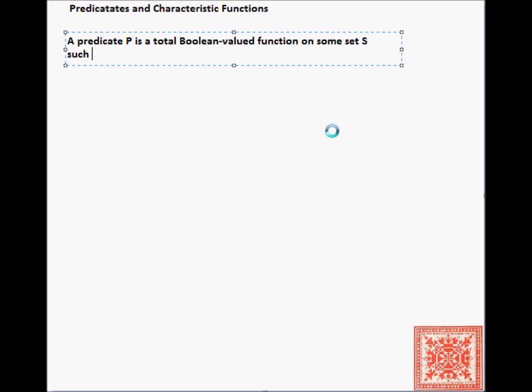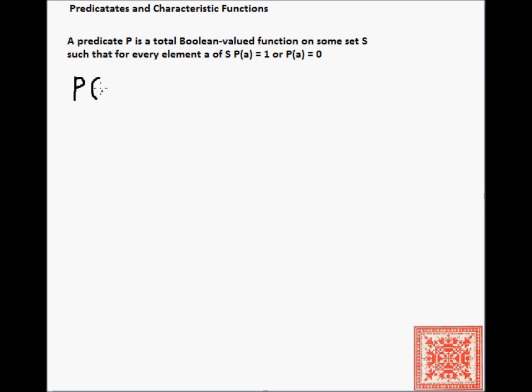It's a Boolean-valued function, meaning that it returns 1 or 0. Its range is a binary set of two elements, either 1 or 0, true or false, such that for every element a of s, its domain, p of a is 1 or p of a is 0.